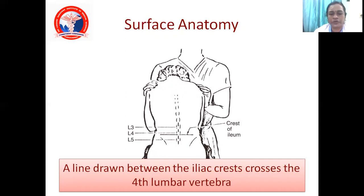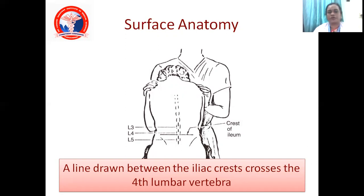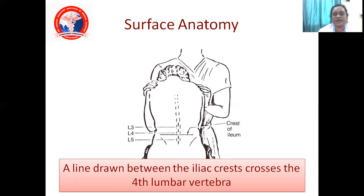To locate the vertebral level, you first select the highest point of the iliac crest on both right and left sides. You then draw a line between these two iliac crests. Once you draw the line, it will cross the fourth lumbar vertebra — that is your reference point. Above will be the third lumbar vertebra and below will be the fifth lumbar vertebra. With this technique, we can identify the intervertebral space.